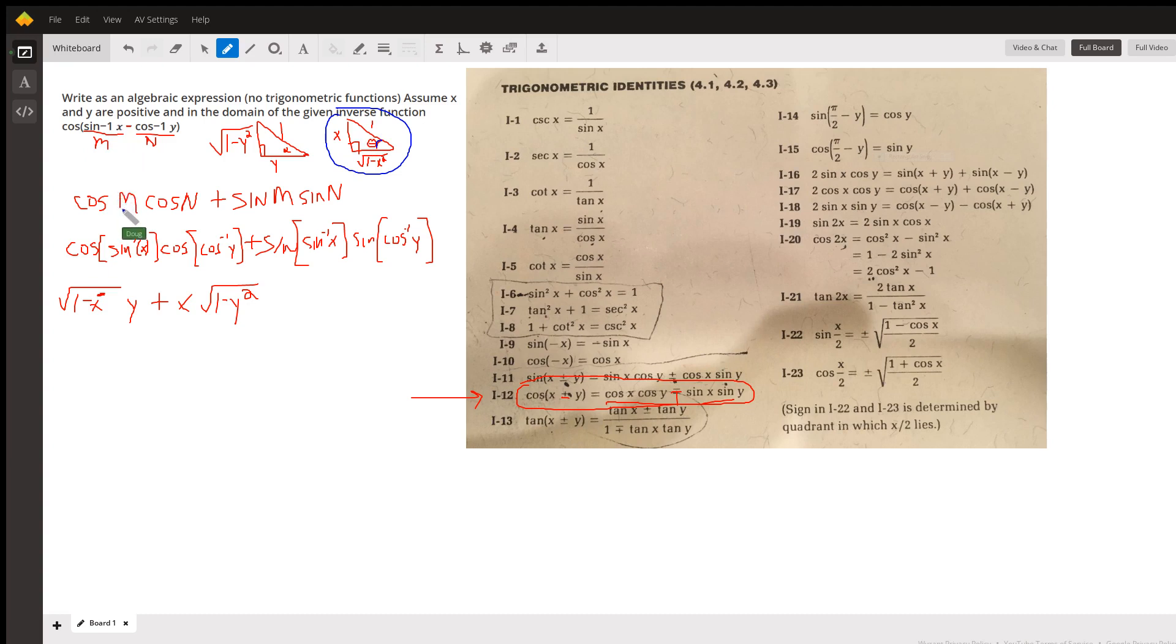We're taking the cosine of M, the angle that has a sine of X. Well, if an angle has a sine of X, X over 1, then by the Pythagorean theorem, this adjacent side is the square root of 1 squared minus X squared.